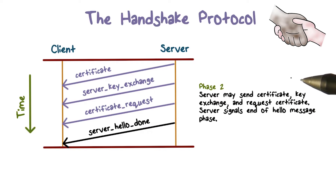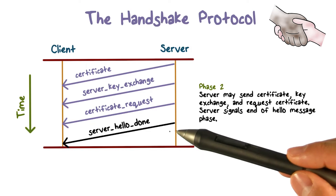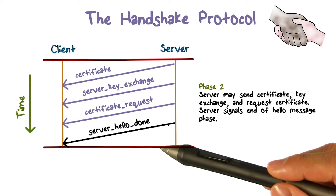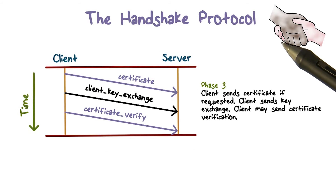The details of phase two depend on the underlying public key encryption scheme that is being used. In some cases, the server passes a certificate to the client, and possibly some additional key information, and a request for a certificate from the client. The final message has to be server hello done, which indicates the end of phase two.